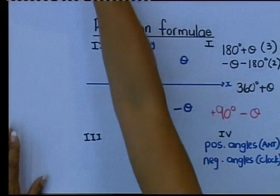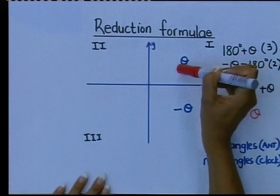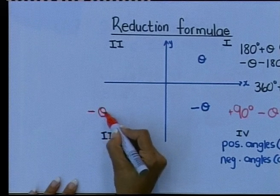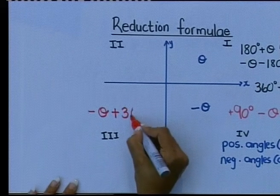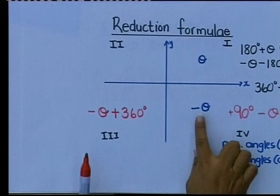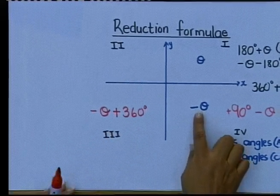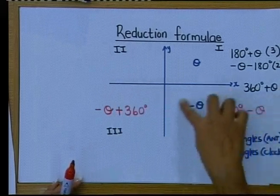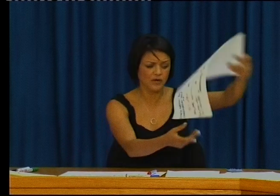One last time — if I have 90 minus theta, minus theta is here, plus 90 takes me there. Let's do one more: if I say minus theta plus 360, where is minus theta? Here. Plus 360 is positive, so go anti-clockwise four blocks: plus 90, plus 180, plus 270, plus 360 — I am in the fourth quadrant. As long as you can do the sums, that is the most important thing.